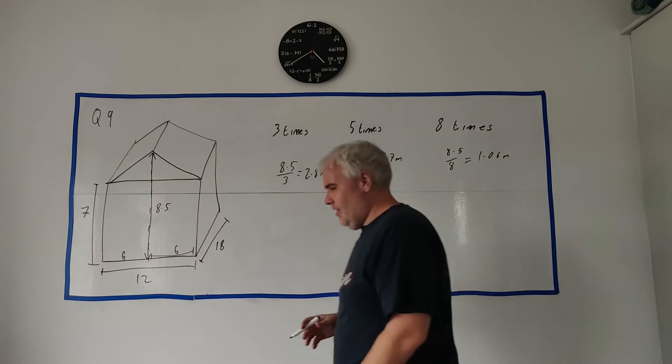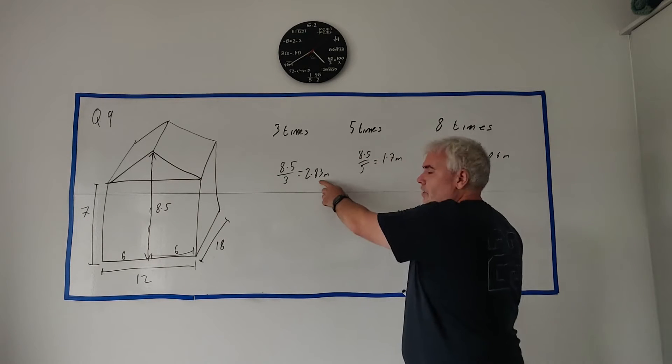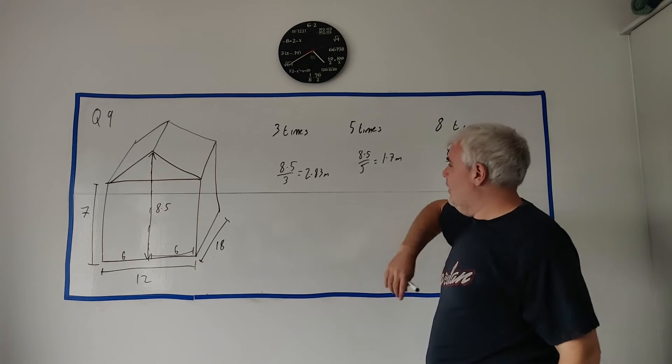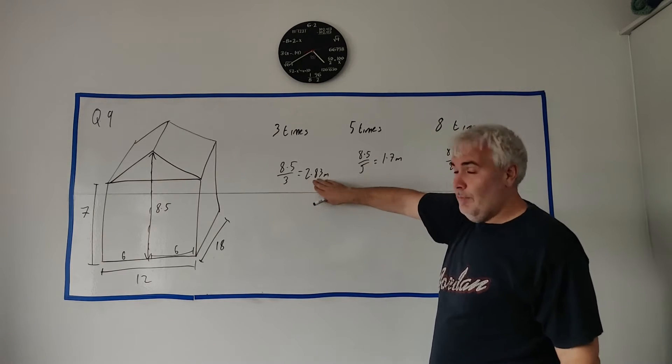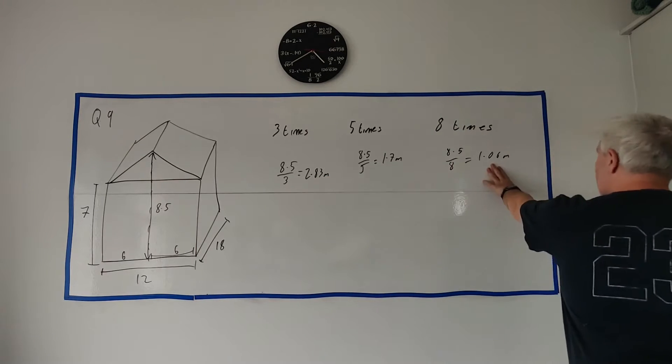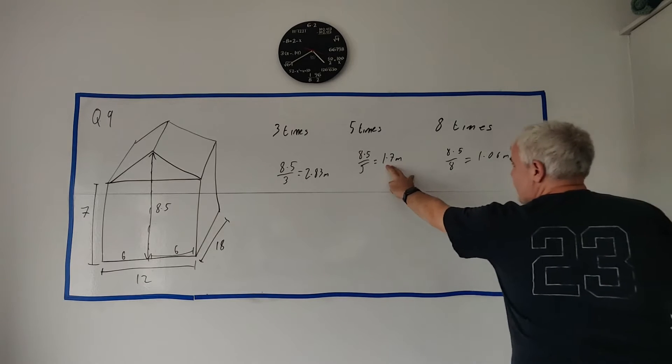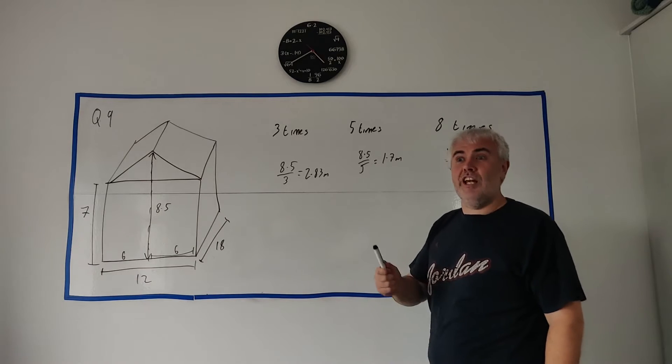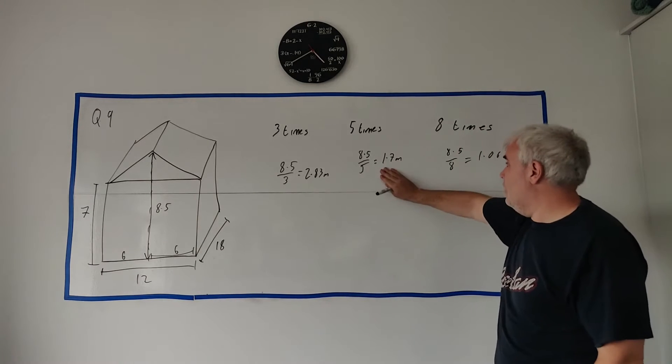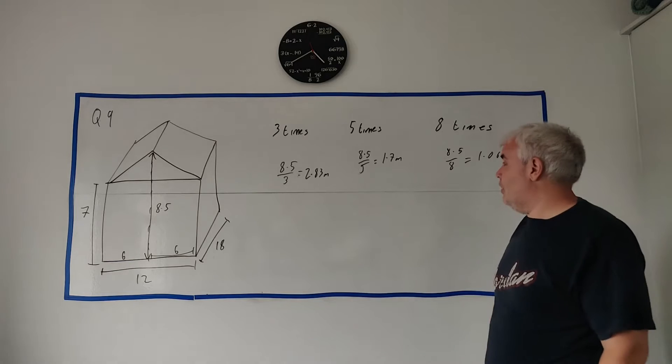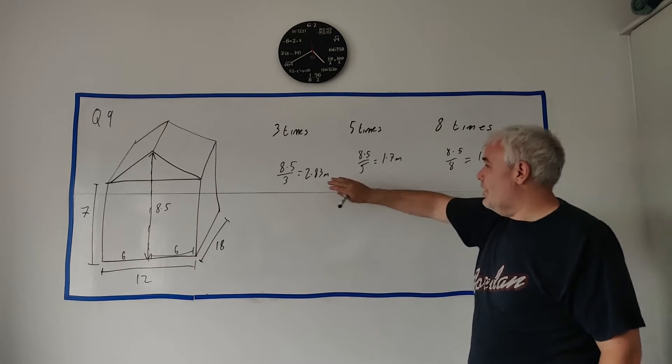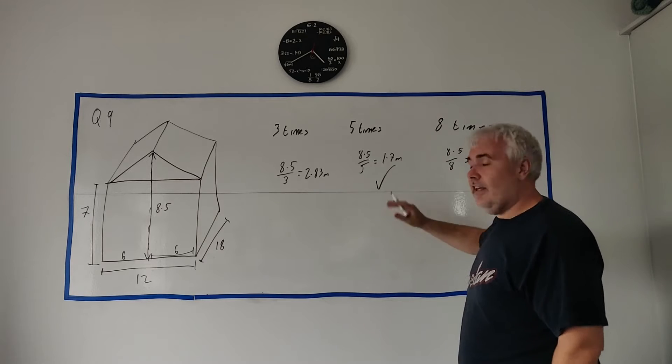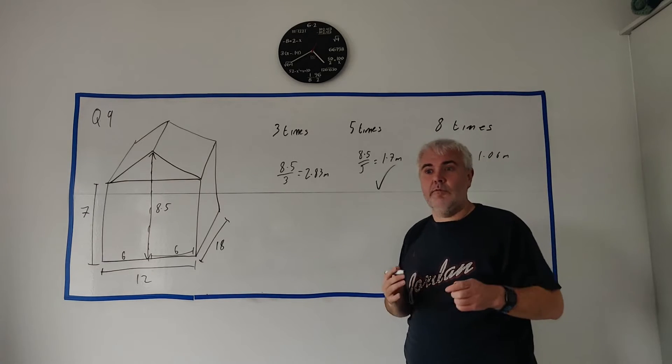Now, all of these are technically possible. I looked up the tallest person in the world, and it's actually 2.7 something, so close to this. There's certainly people this short, and this is about the average height of a person. But it's very important, they ask us what's the most likely? The most likely is this one, 1.7 is around the average height of a person. This is way too tall, way too short. Any kind of explanation like that will get you full marks.